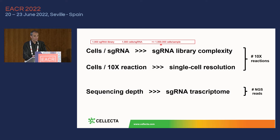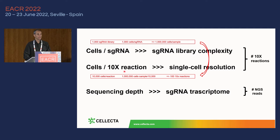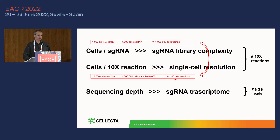These 1 million cells need to be loaded into the Chromium machine. Using the Chromium controller, which can accept up to about 10,000 cells per reaction (keeping it a little lower to avoid double-cell encapsulations), that means with 1 million cells you need 100 reactions. That's a crazy number of reactions for just one sample.